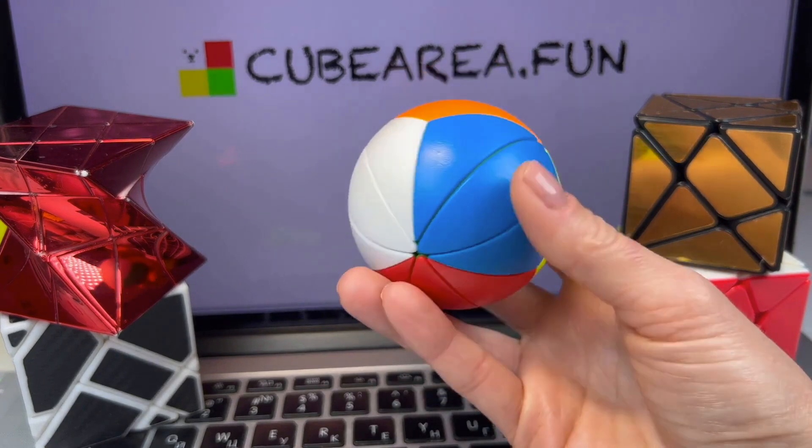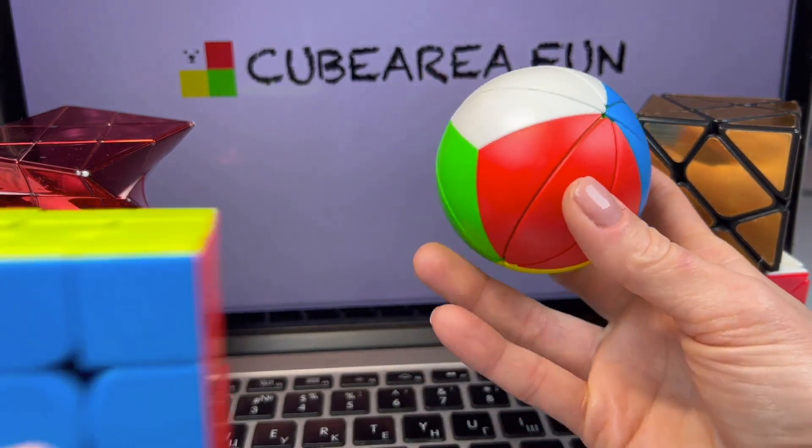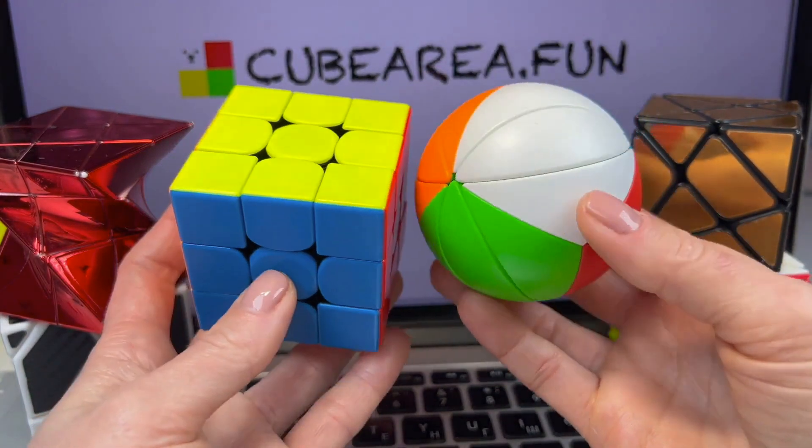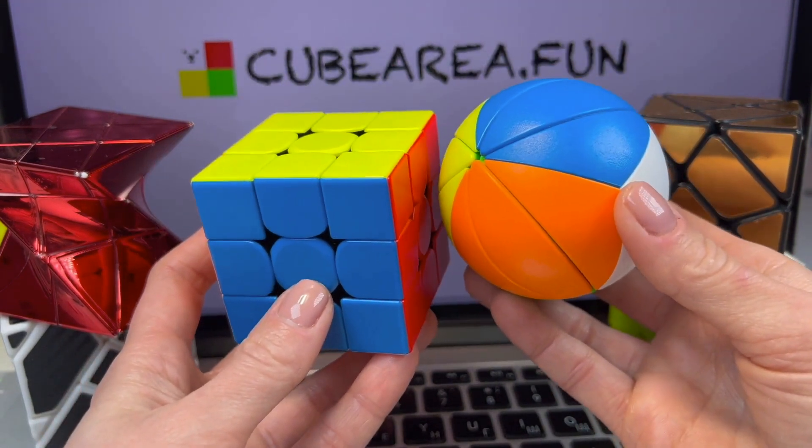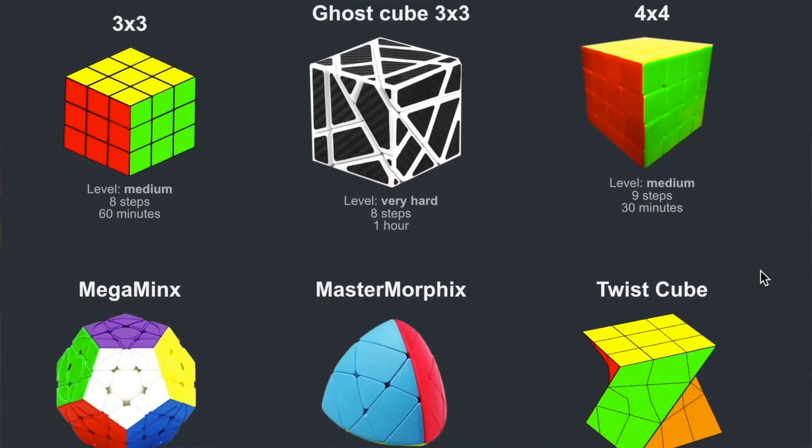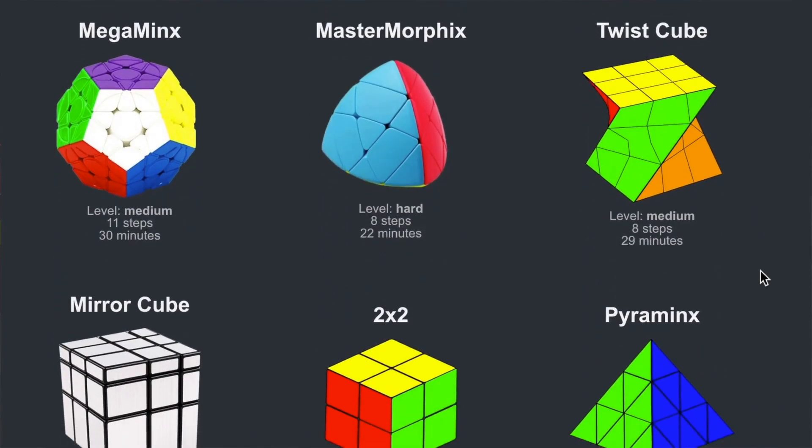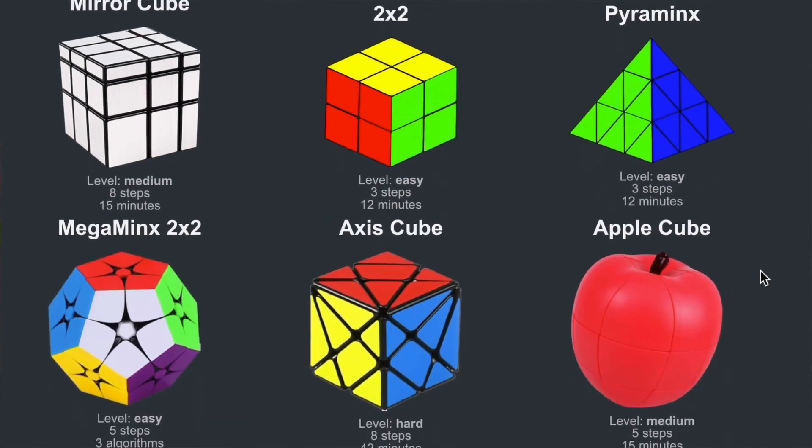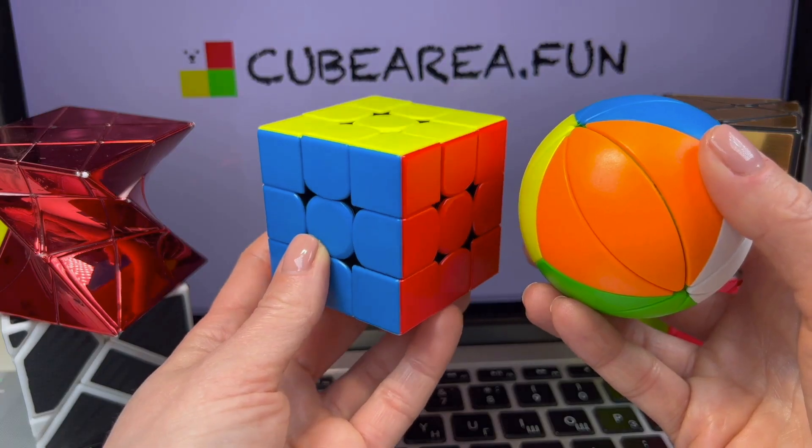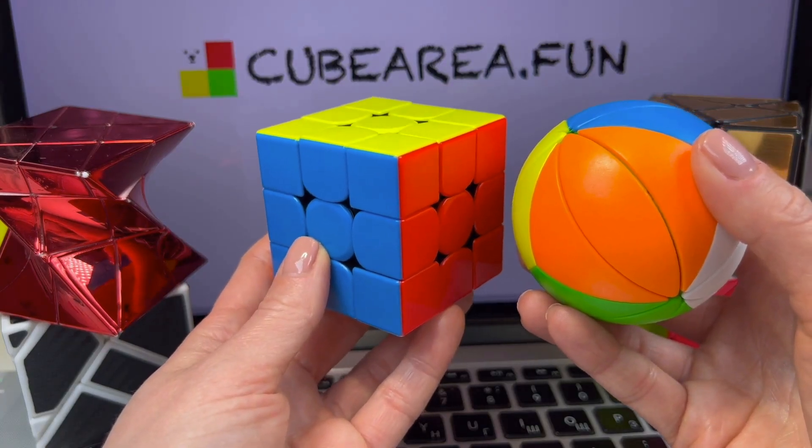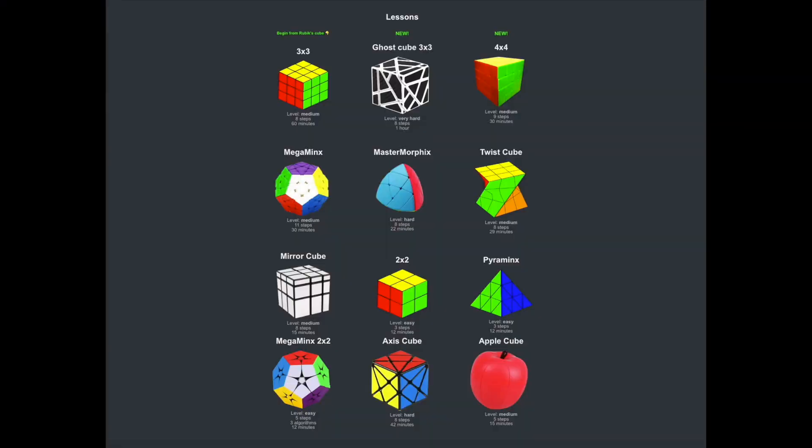Today we will not only assemble this ball, but we will also figure out what could possibly be common between these two intriguing and fascinating puzzles. We have many lessons. All puzzles relate to the 3-by-3 Rubik's cube. All puzzles use 3-by-3 cube algorithms. This ball is no exception. Because all the puzzles we've previously covered on our channel are based on the algorithms we use for assembling the 3-by-3 Rubik's cube.